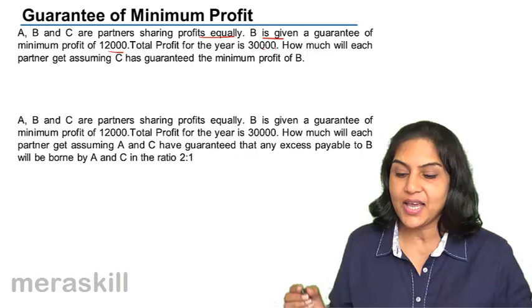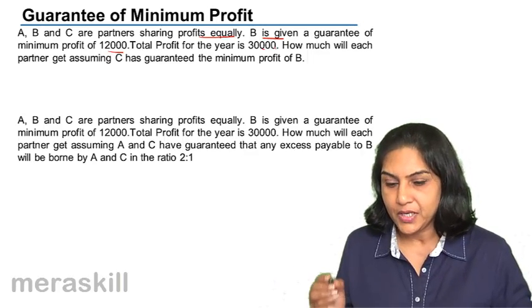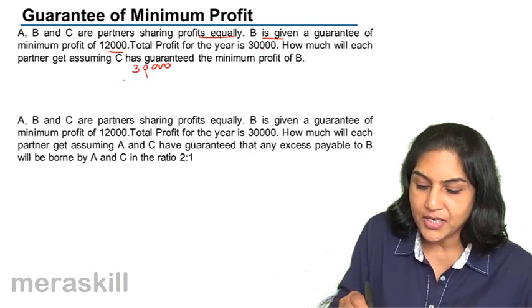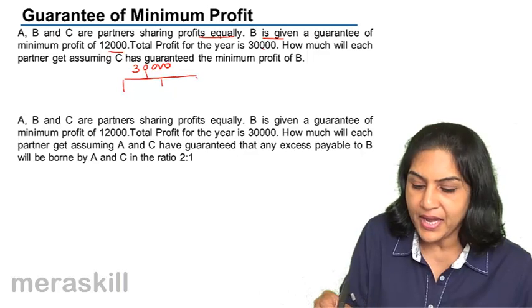Assuming C has guaranteed the minimum profit of B. So again, let us just see the partners. What is the total profit? 30,000. It has to be divided among A, B and C.